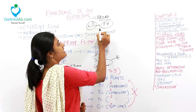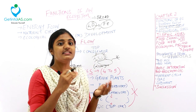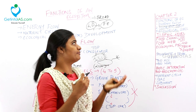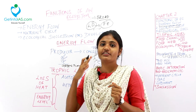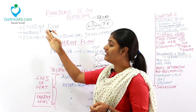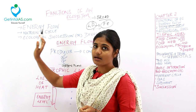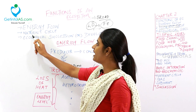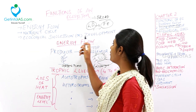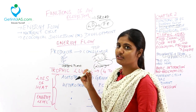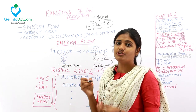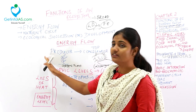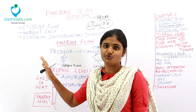These two things — living organisms and the physical environment — share materials and interact with each other. The functions of an ecosystem are broadly categorized into three subheadings: energy flow, nutrient cycle, and ecological succession or development. Energy flow starts with the green plants, that is, the producers.